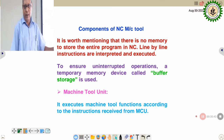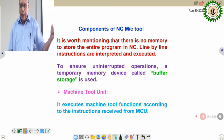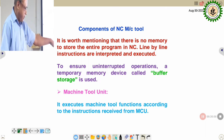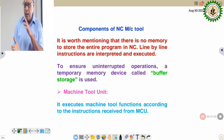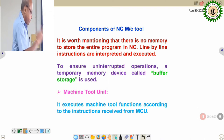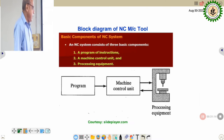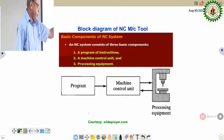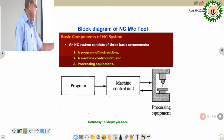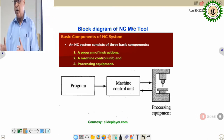The machine tool unit is similar to conventional machines but with certain modifications. It executes machine tool functions according to instructions received from the machine control unit. A block diagram shows the three main components: program of instructions (input), machine control unit (processing), and the physical machine tool (output).